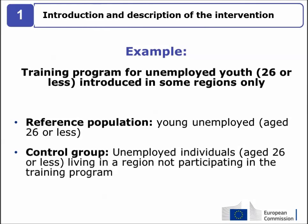Define the reference population. For example, to evaluate a training program for unemployed youth, the reference population would be all young unemployed individuals aged 26 or less. When the intervention has only been introduced in some regions or cities, a potential control group could then consist of unemployed individuals aged 26 or less living in a region or city not participating in the intervention.